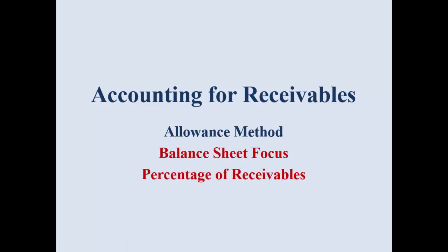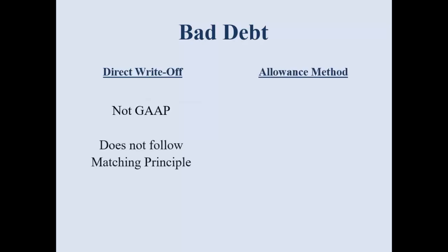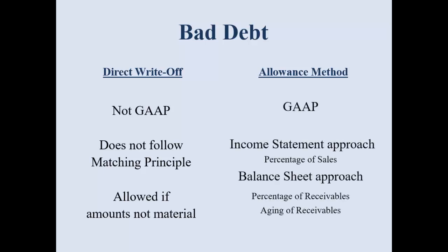We are going to look at the balance sheet focus when calculating the percentage of total receivables, which will be different than the percentage of sales. To review: the direct write-off method is technically not GAAP — it is allowed for small companies with the cost-benefit constraint if they rarely deal with bad debt and the amount is not material. The allowance method is required by GAAP, with the income statement approach using percentage of sales and the balance sheet approach using percentage of receivables or the aging of receivables method.